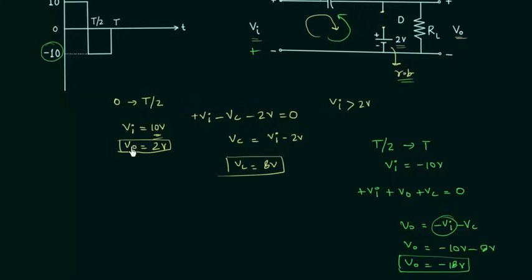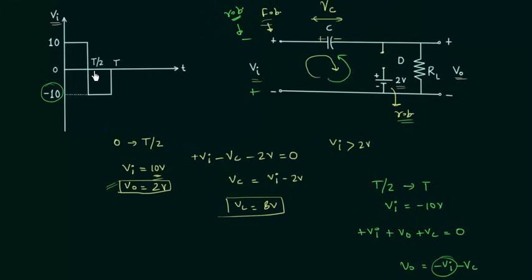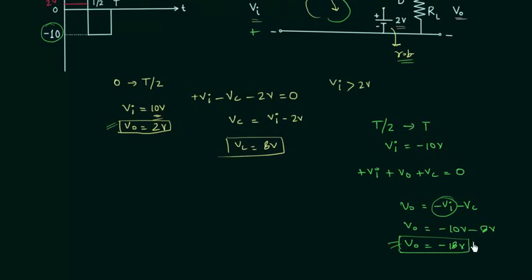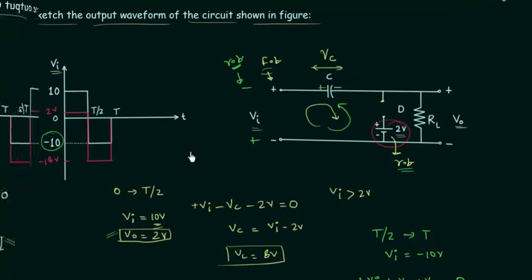Now we have the output voltage for both half cycles, so we can plot the output waveform. From 0 to T/2 the output voltage is 2 volts, and from T/2 to T the output voltage is minus 18 volts. You can see we have additional swing by using the DC supply. In the next lecture we will solve one example based on the clamper circuit covering everything we have studied. See you in the next lecture.